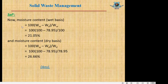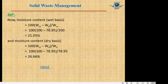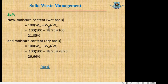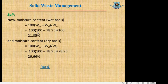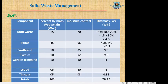To calculate moisture content we need two items: Ww (weight of moist waste) and Wd (weight of dry waste). Moisture content can be calculated in two ways — on a wet basis and on a dry basis. We will first calculate the values of Ww and Wd. The percent by mass column represents the moist weight basis, as there is some moisture in the solid waste.